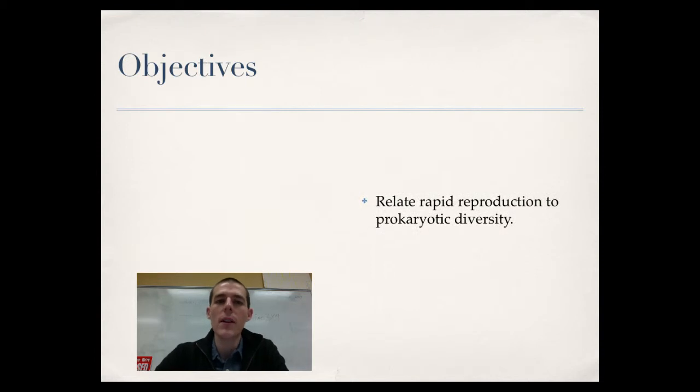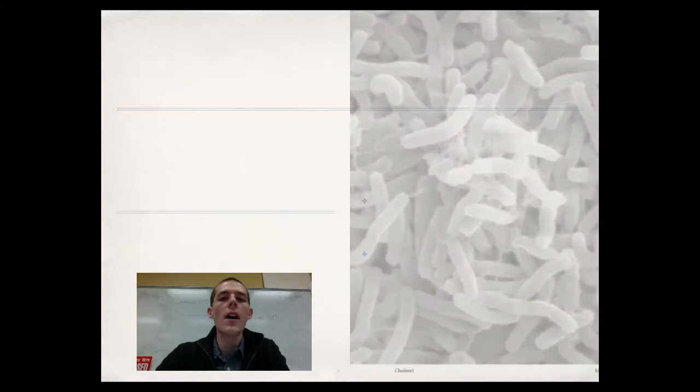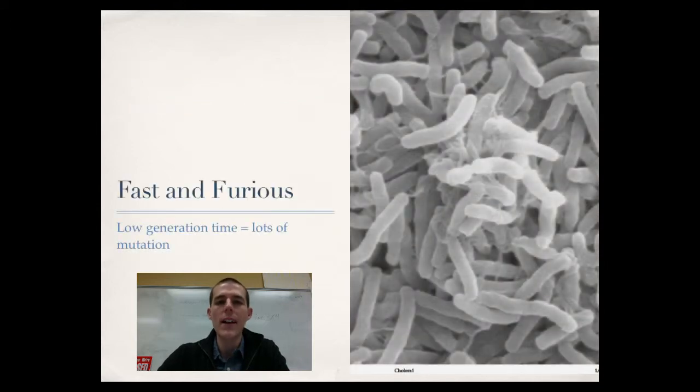Two things I need you to know by the end of this video. First of all, relate rapid reproduction to prokaryotic diversity. And then finally, compare and contrast prokaryotic gene recombination strategies. So the topic for the day is how prokaryotes, even though they don't go through sexual reproduction, have so much diversity within their ranks.